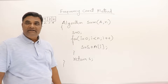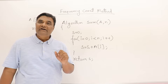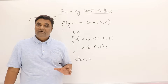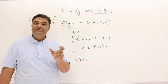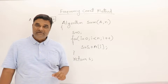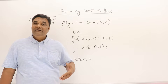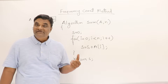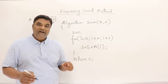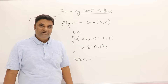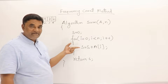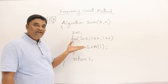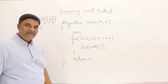Let us analyze the time taken by this algorithm using the frequency count method. The time taken by an algorithm can be found by assigning one unit of time for each statement. If any statement is repeating for some number of times, we calculate the frequency of execution of that statement to find the time taken. Here we have some statements that repeat, so we will find out the frequency and that will give us the time taken by the algorithm.